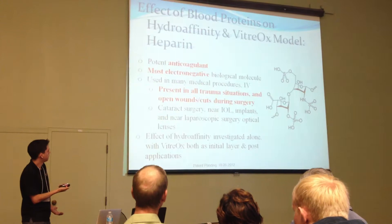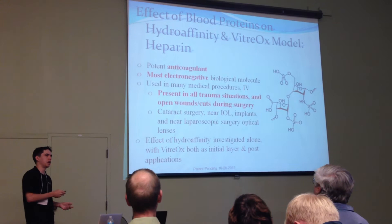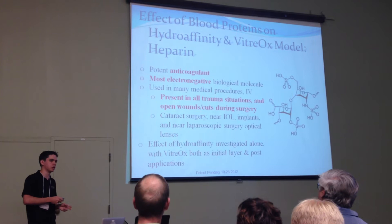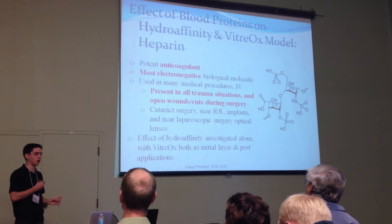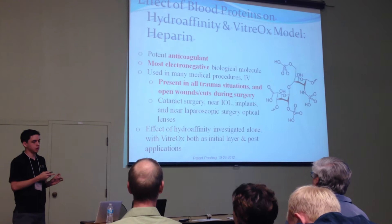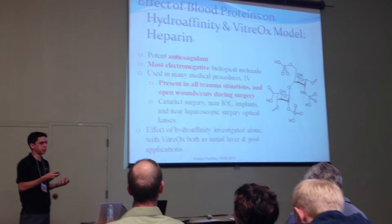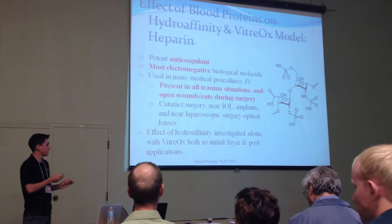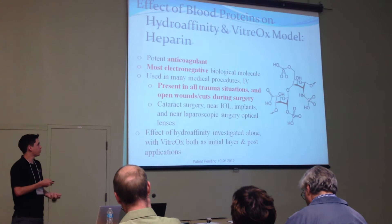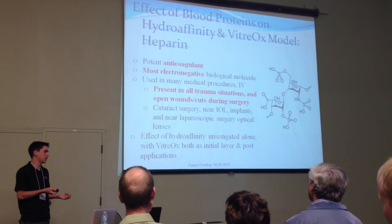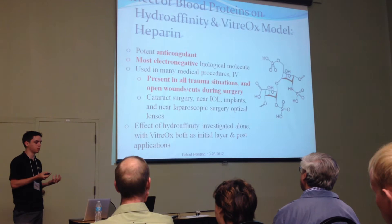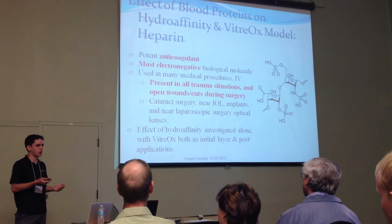We had 20 different clinical trials with a 90% success rate. The two trials that did not perform up to our standards were when blood came into contact with our lenses. So we began working on expanding Vitriox into Protonox, which will ideally prevent blood from ruining our Vitriox application and from causing fogging on our lenses. We started studying individual blood proteins, beginning with heparin because it is extremely electronegative, suggesting it would bond very tightly, and it is used in all trauma situations as a very common anticoagulant.